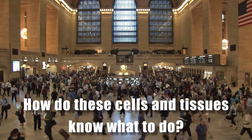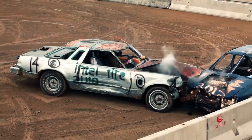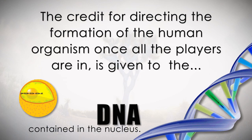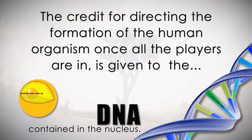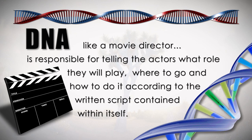The question here is, how do these cells and tissues know what to do? Well, if all goes well, and no unexpected or deliberate internal or external cause comes into the picture, the credit for directing the formation of the human organism is given to the DNA, which is contained in the organelle known as the nucleus. The assigned DNA of each cell is responsible for directing where it goes and what role it will play within the human organism. The DNA, much like a movie director, is responsible for telling the actors what role they will play, where to go, and how to do it, according to the written script contained within itself.